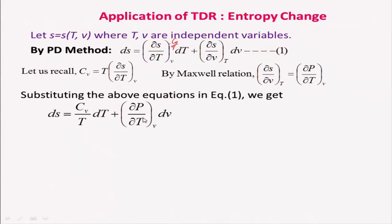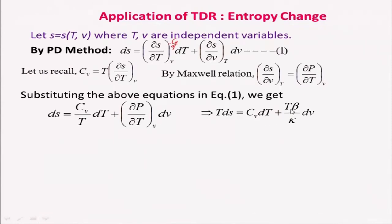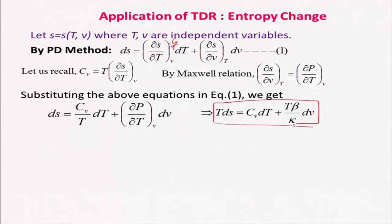Using these substitutions, dS = (Cv/T) dT + (∂P/∂T)|V dV, where all right-hand-side terms are measurable properties. Multiplying through by T: T dS = Cv dT + T(β/K) dV. This is the entropy change expressed entirely in measurable properties.